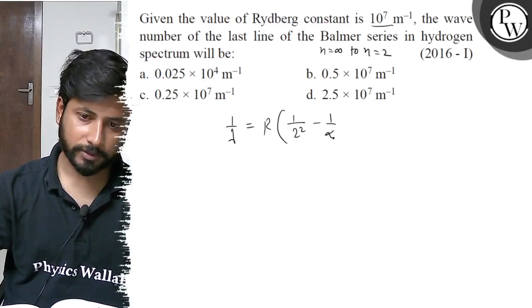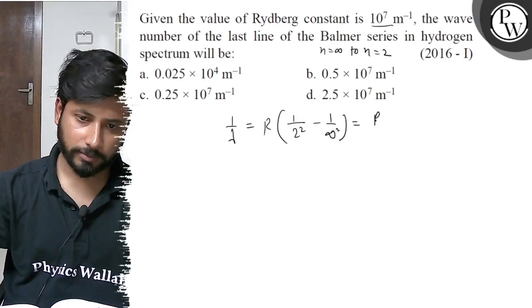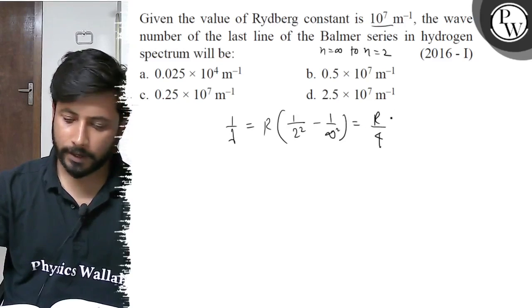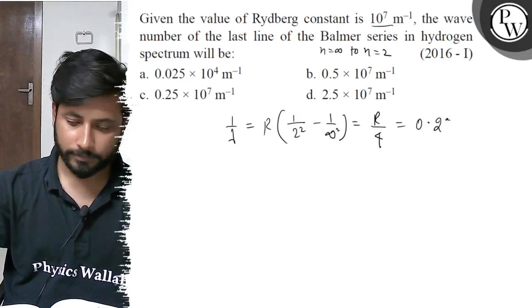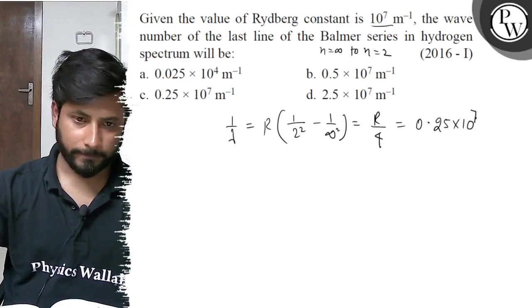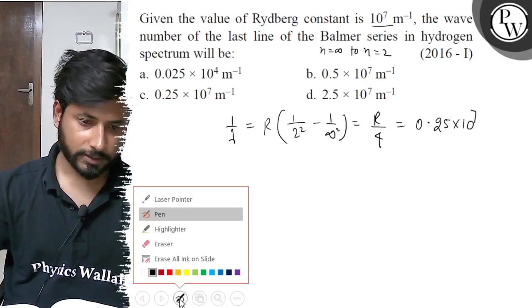This simplifies to R/4. R/4 equals 0.25 × 10^7 per meter. Therefore, the wave number 1/λ = 0.25 × 10^7 per meter.